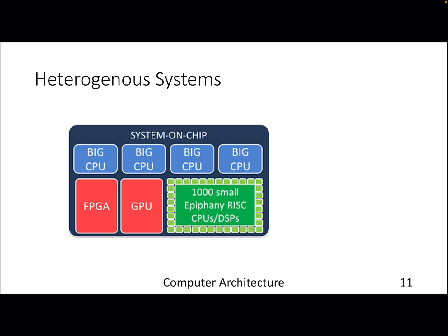Current systems are heterogeneous in nature. When you buy a new laptop or custom machine, you'll find CPUs, DSPs, small RISC-like CPUs, GPUs, and FPGAs — heterogeneous processing power sitting on-chip, commonly known as a System on Chip (SoC). We only covered the CPU part in this course, but there are many other processing engines suited for various application domains.